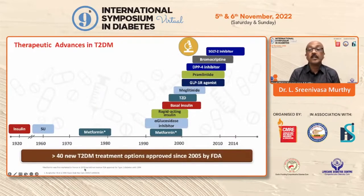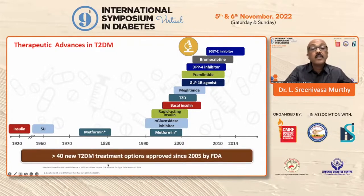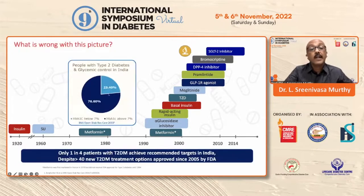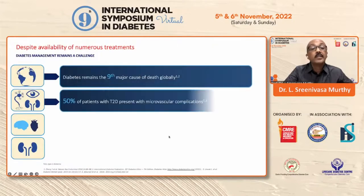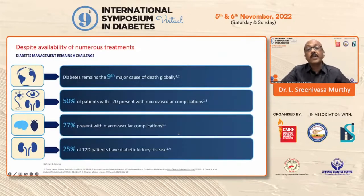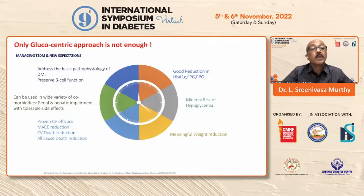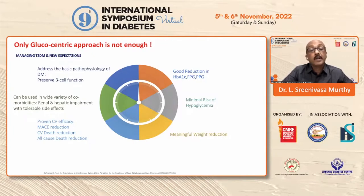Looking at therapeutic advances, more than 40 new molecules have been known since 2005 after metformin. Look at this slide on people with diabetes and glycemic control in India — only 23%, so only one out of four are controlled well. It results in all these complications: more than 50% end up with microvascular, more than 25% macrovascular, and about 25% with DKD. Despite all these numerous available options, only glucose-centric management is not going to be enough.